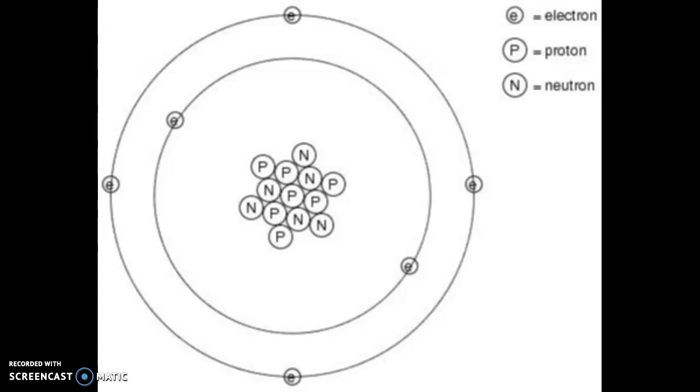As we talked about earlier, each atom has three different kinds of particles inside it. Remember? Protons, neutrons, and electrons.